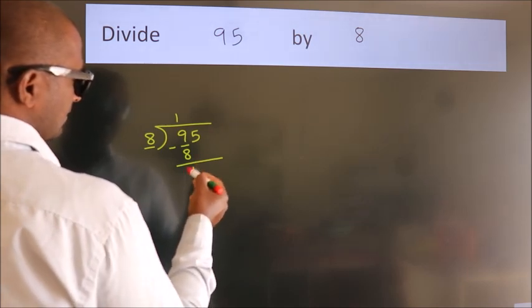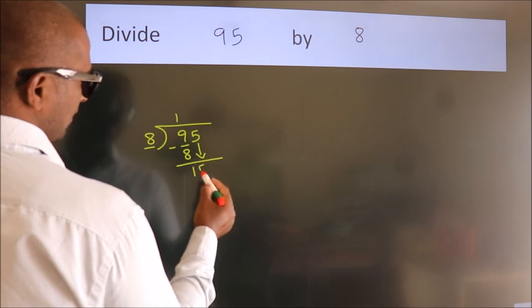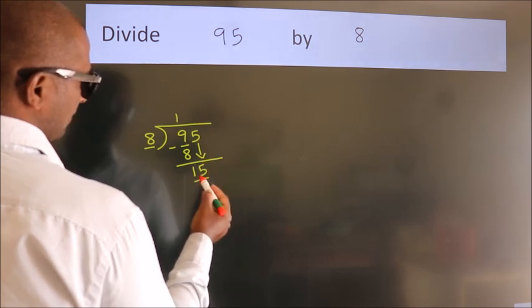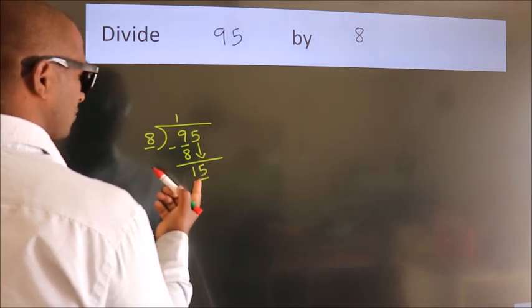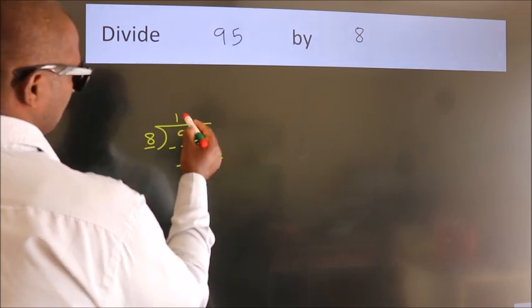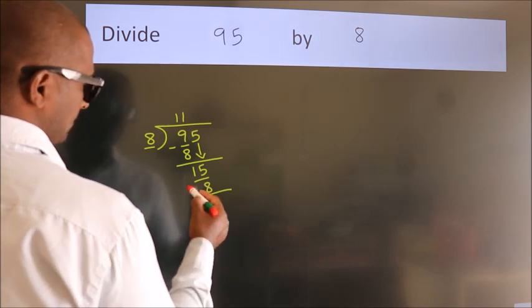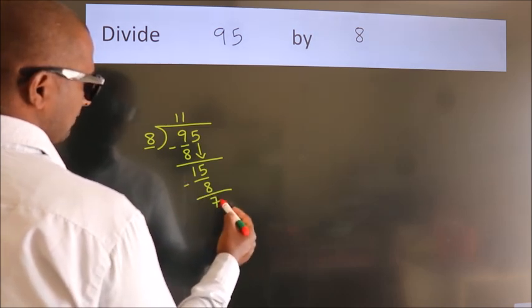After this, bring down the beside number. So 5 down, giving us 15. A number close to 15 in the 8 table is 8 once 8. Now we subtract. We get 7.